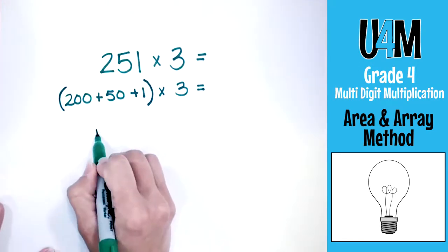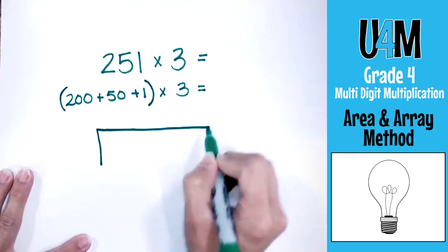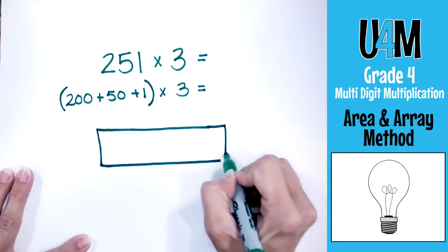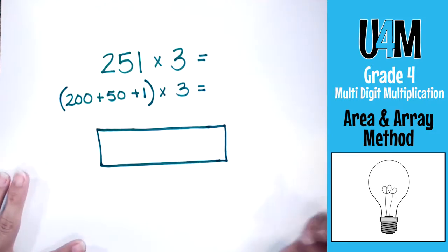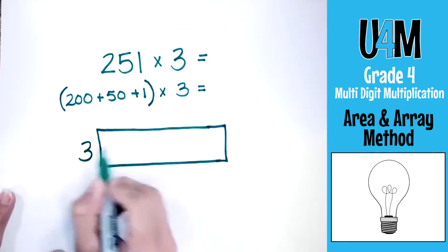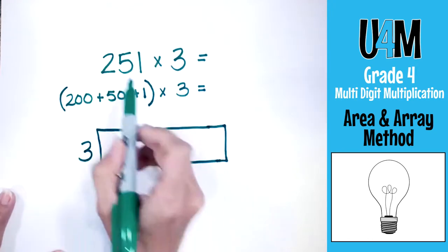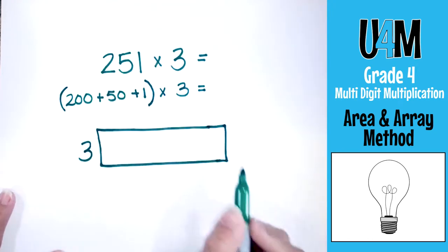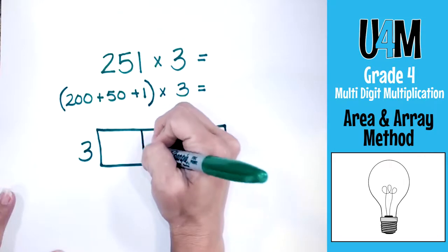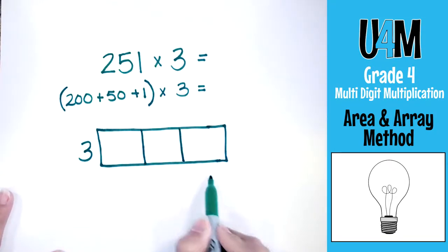We're going to build a grid, or an area array box, to house these numbers. We're going to put our smaller number on the side — this tells us how many rows we're going to have. Then our other number tells us how many columns we're going to have. In this problem the other number is 3, so I have three columns.